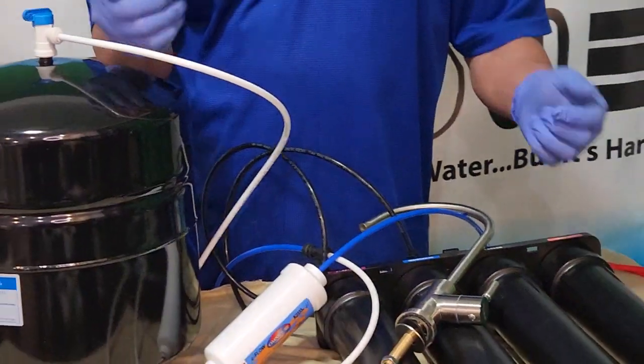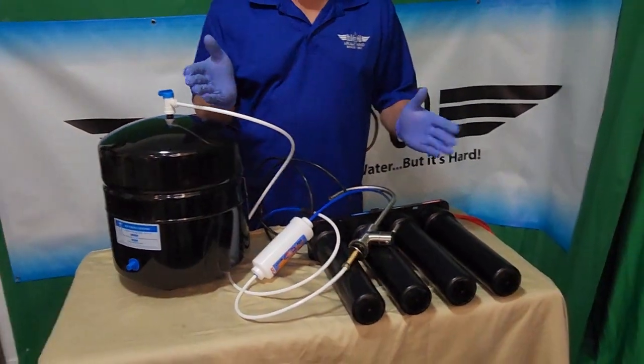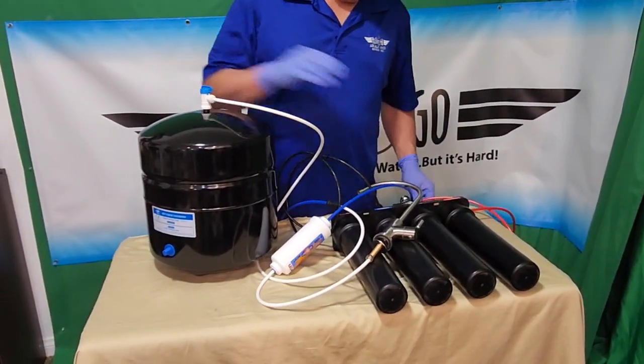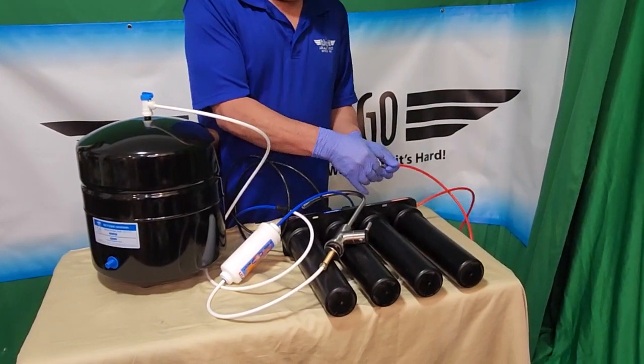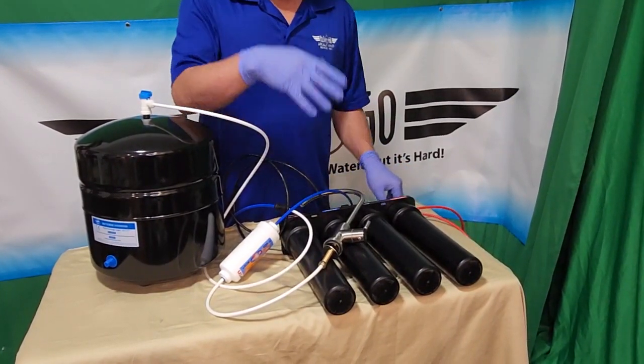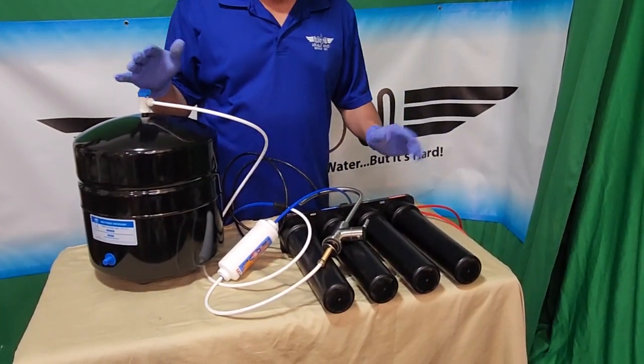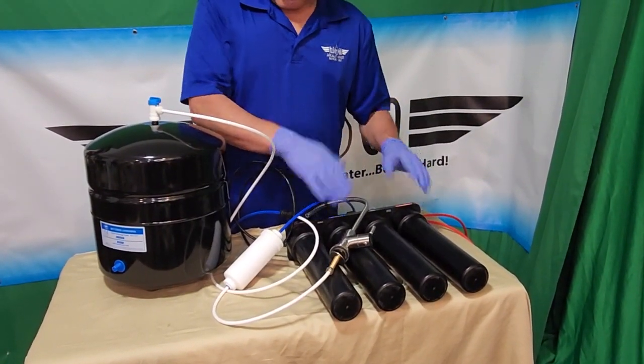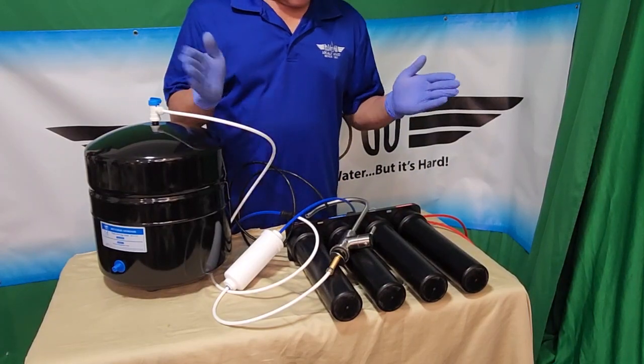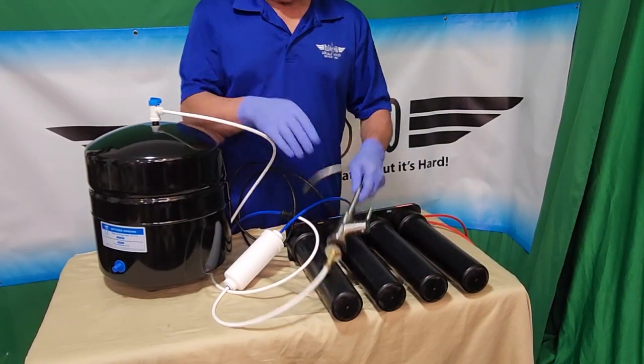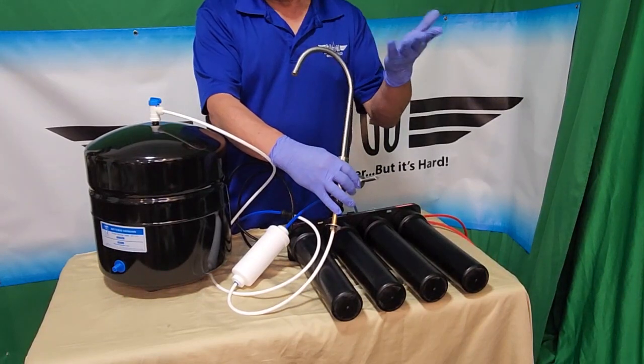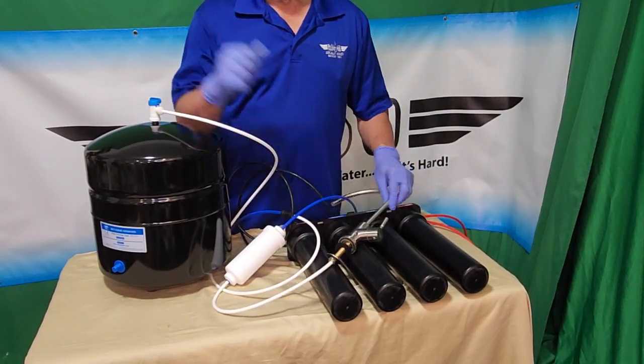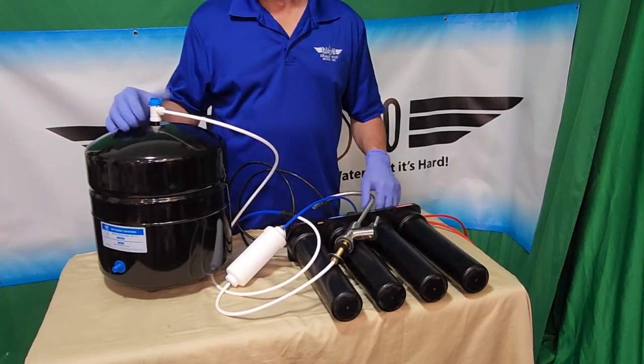So now that you've changed all your filters, you want to check for leaks. The way you do that, you turn the water back on on top of your tank and on your shutoff right here. The water will flow through the system. You check for leaks. You want to check fittings here. You want to make sure it's not leaking there. Once you secure that there's no leaks, you drain the tank, let all the water come out. When it's done, wait about an hour and you're ready to rock and roll. Thank you.